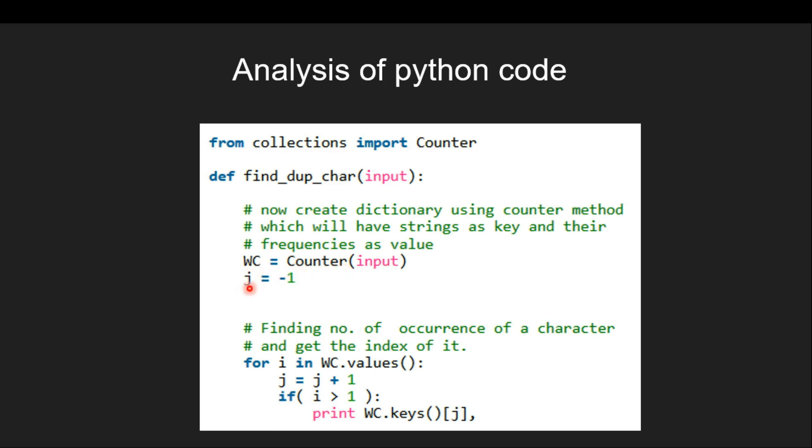Then we declare a temporary variable j which is assigned by minus one. Then inside the for loop, we find frequencies of character. Then j which takes care of indexes of each character. Thereafter, if condition checks whether any frequency is greater than one or not.